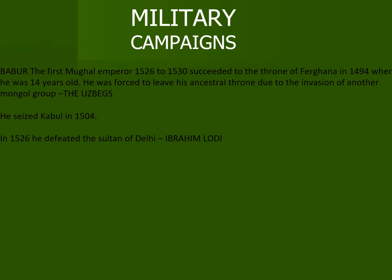Now let us understand the military campaigns carried out by the Mughals. Babur was the first Mughal emperor. He ruled from 1526 to 1530 and had succeeded to the throne of Fergana in 1494 when he was only 12 years old. He was forced to leave his ancestral throne due to the invasion of the Uzbeks. After years of roaming he seized Kabul in 1504, and in 1526 he defeated Ibrahim Lodi, the Sultan of Delhi, at Panipat, and captured Delhi and Agra.